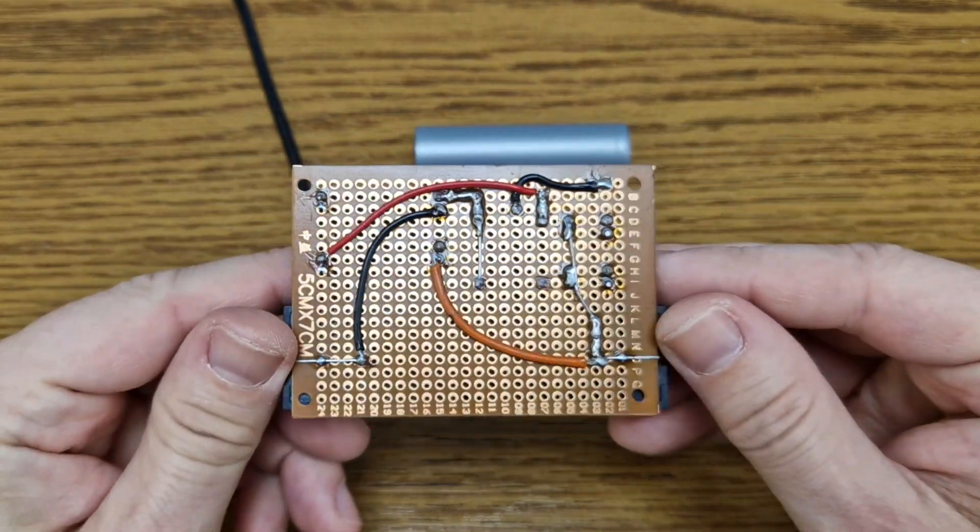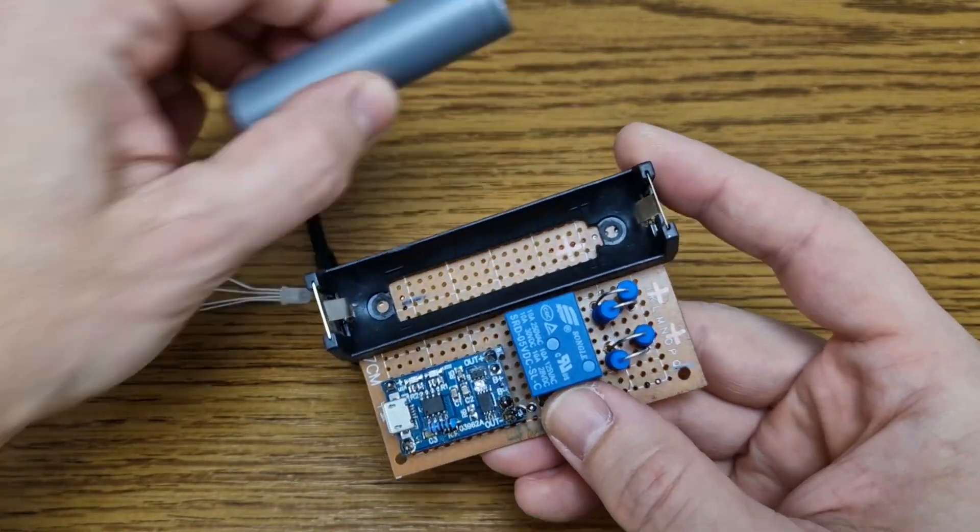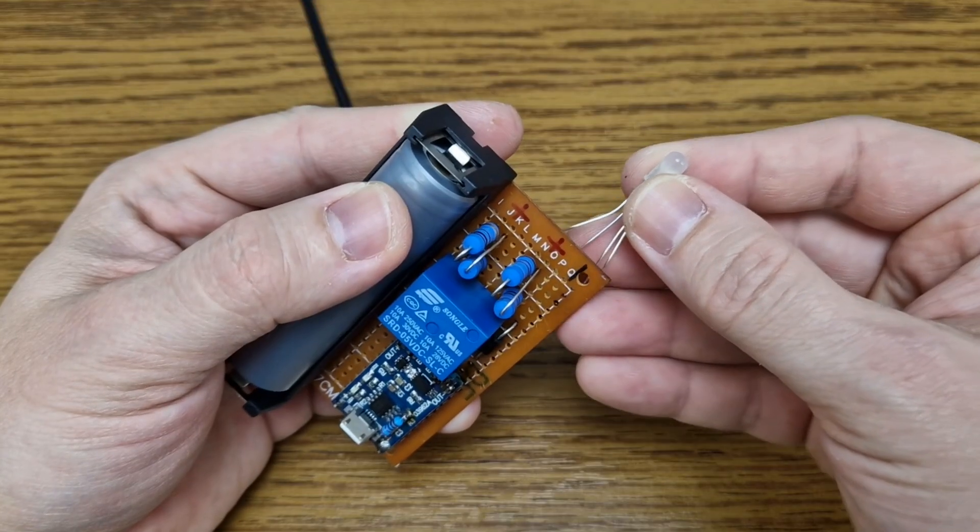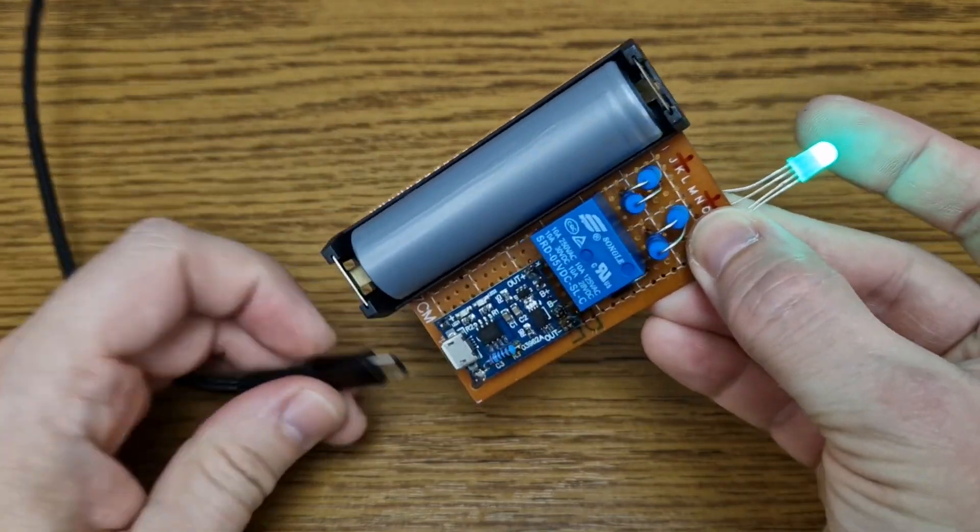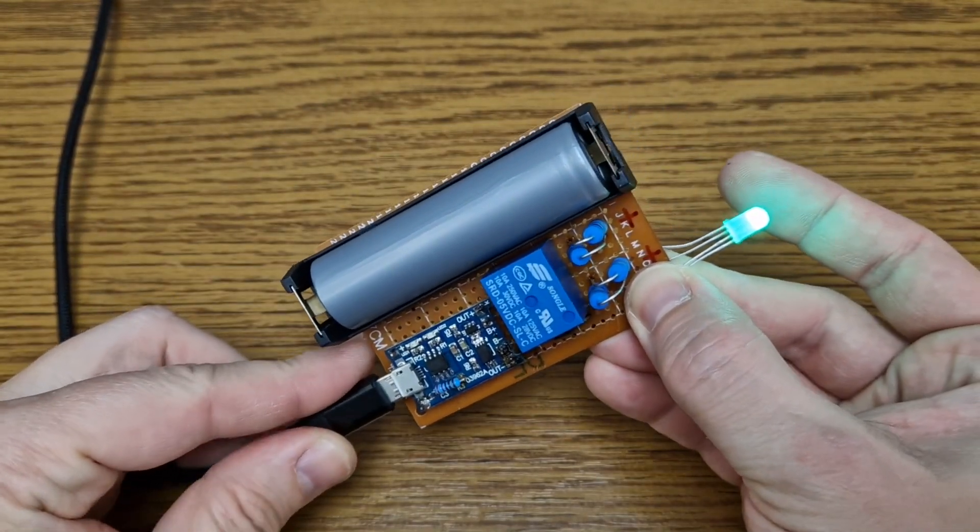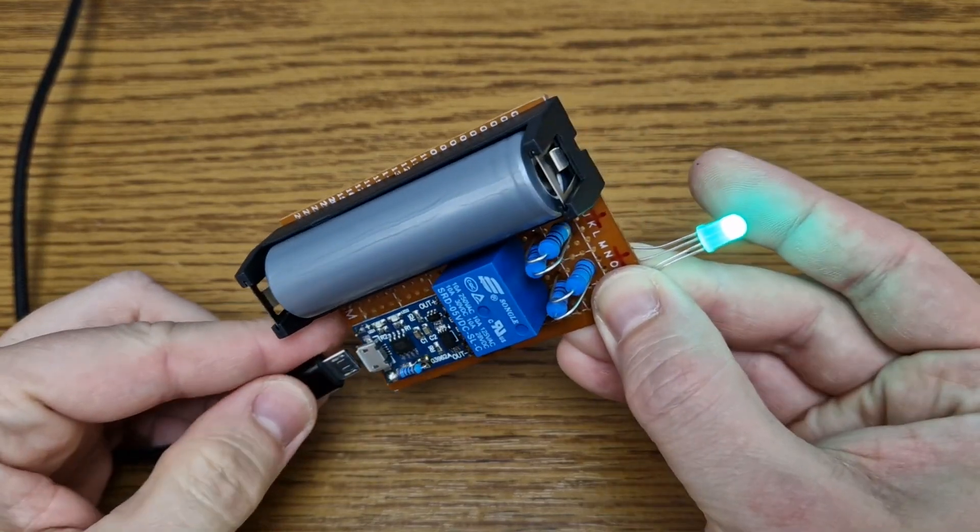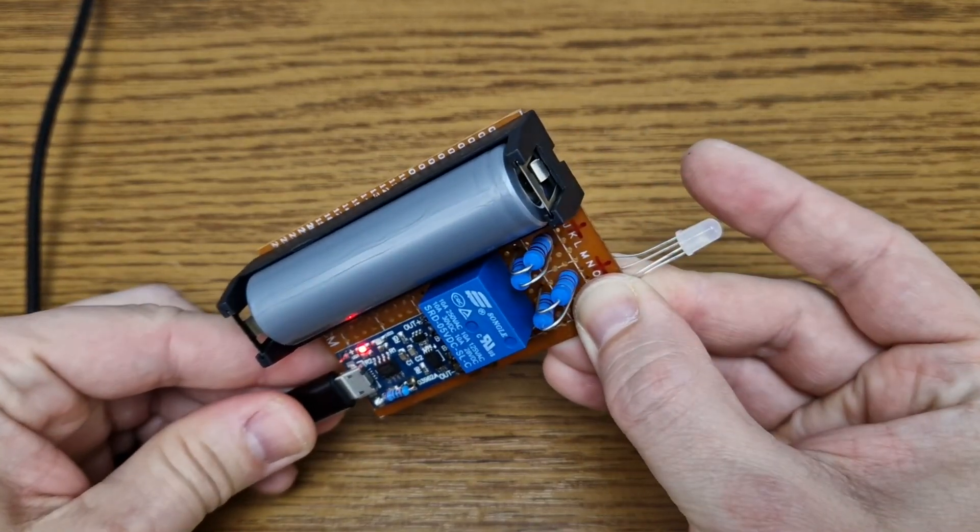As I said, it's nothing special. Let's add a 18650 lithium cell and test it. When the mains power is interrupted, the LED lights up. And when the power is back, the battery is charging.